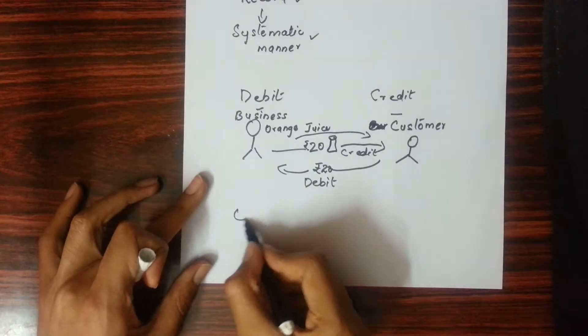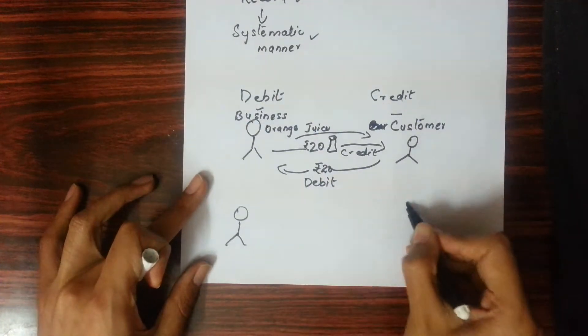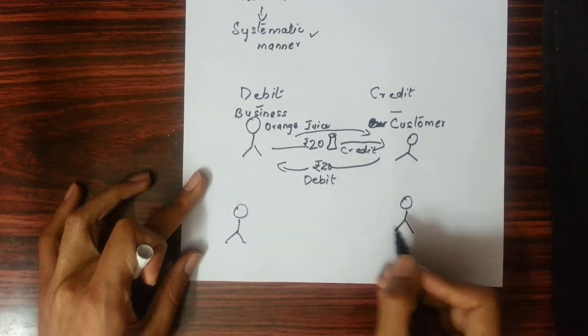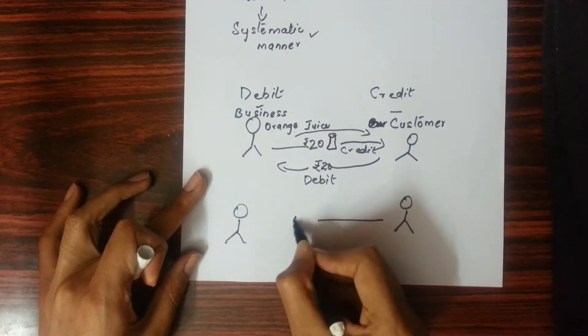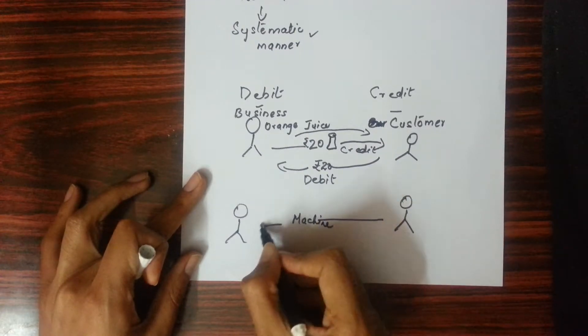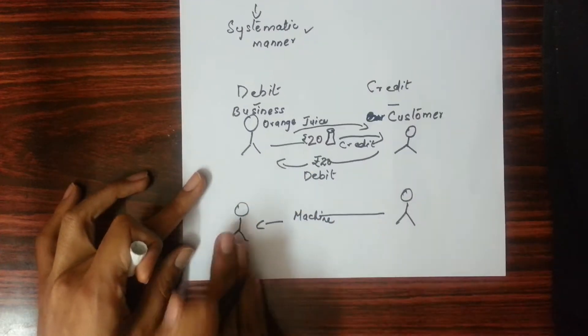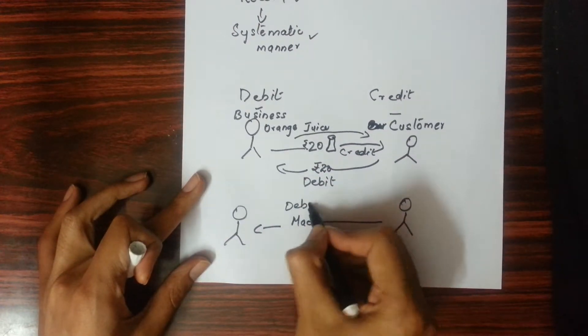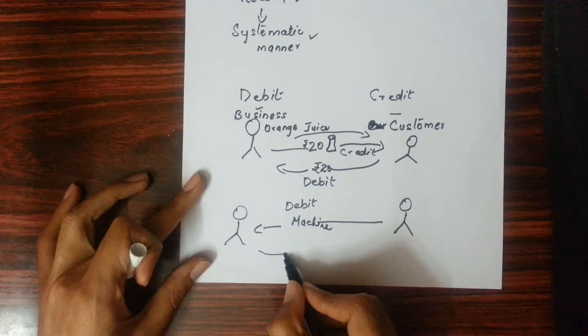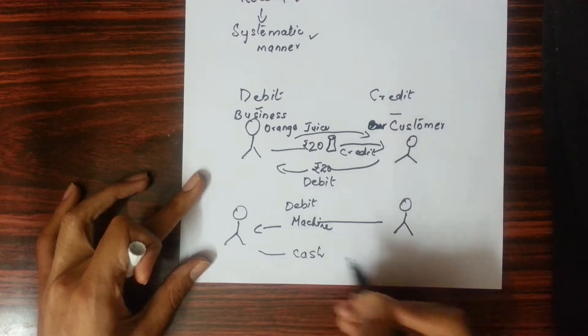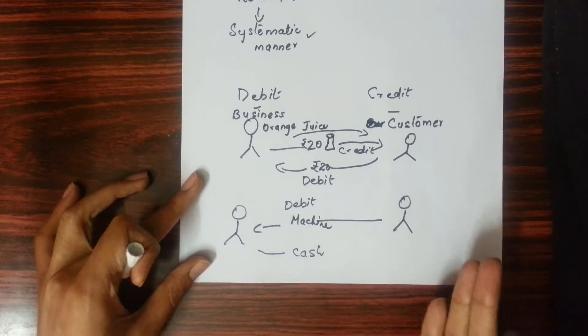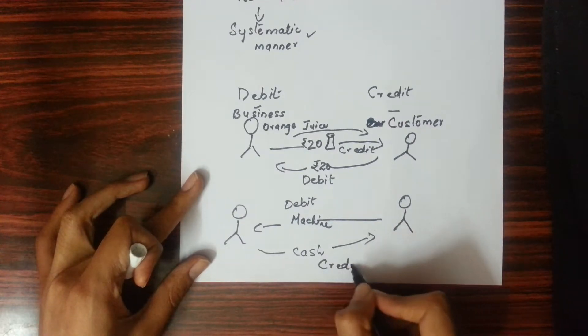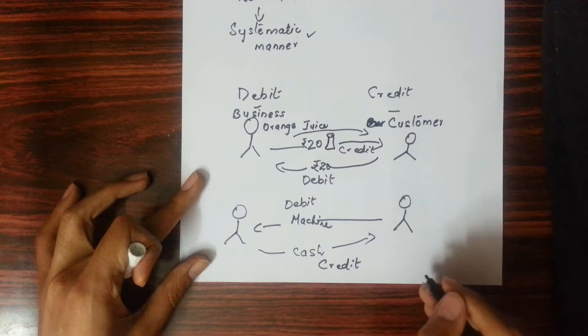In the same way, business and customer - if you buy a machine from the customer, then what came into your business? A machine came. So the machine is debited to us. And what is going from us? You will pay it in cash, or pay from bank, or pay by check. Whatever it is, amount is going from you. So this amount will be credited. Remember these things well.